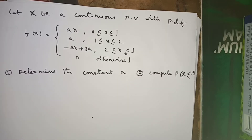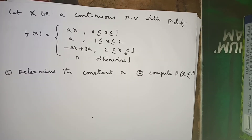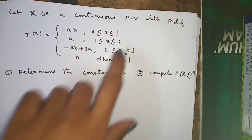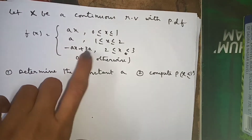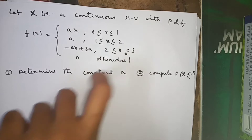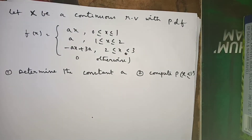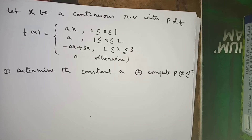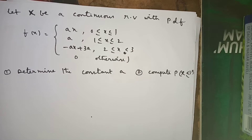Hello everyone. This is one more PDF problem — a continuous random variable problem. Let X be a continuous random variable with the PDF given as: f(x) = ax for x in [0,1], f(x) = a for x in [1,2], f(x) = -ax + 3a for x in [2,3], and 0 in the remaining cases. We have to determine the constant a and compute P(X ≤ 1.5).